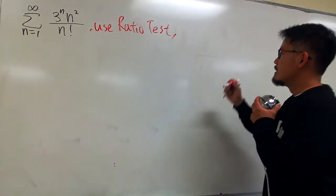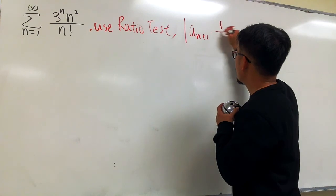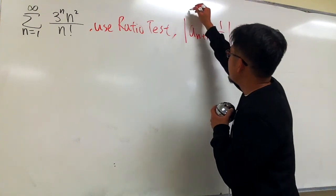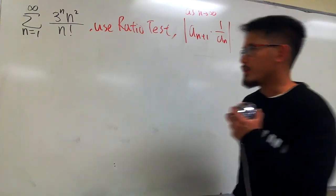Let me remind you, the ratio test: we have to first work out a_(n+1) times 1 over a_n, and then we take the limit as n goes to infinity. Let's do it right here.